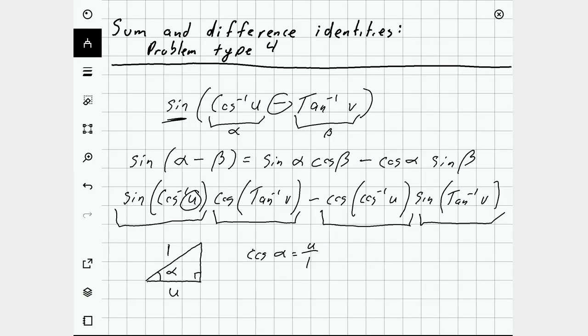Using the Pythagorean theorem from here, we can then say that the opposite side must be the square root of 1 squared, which is 1 minus u squared.